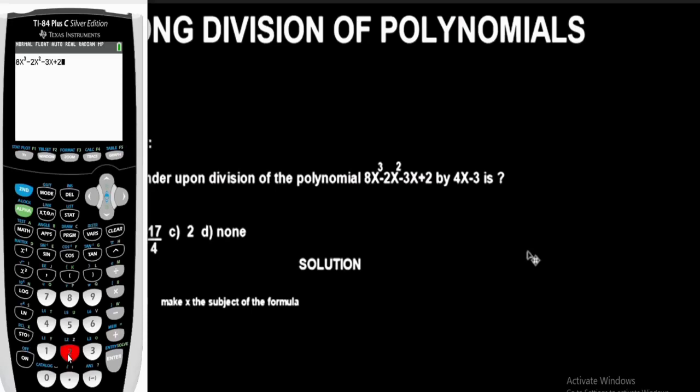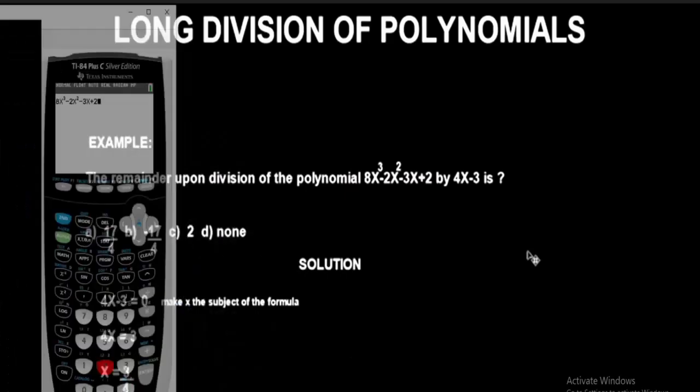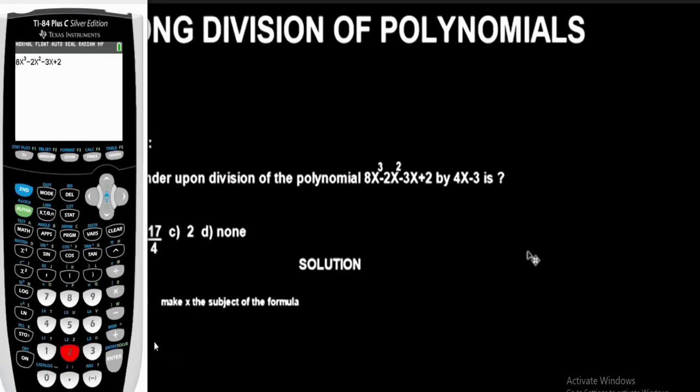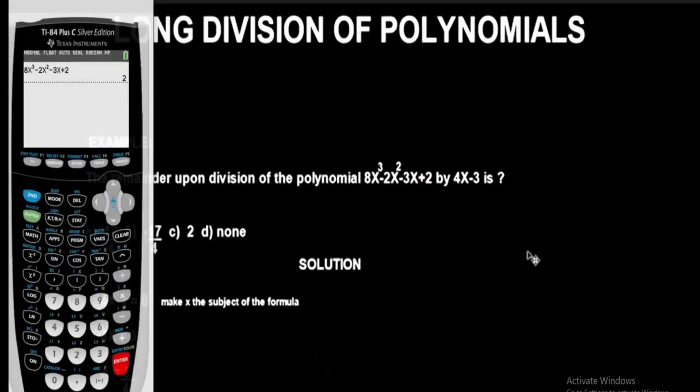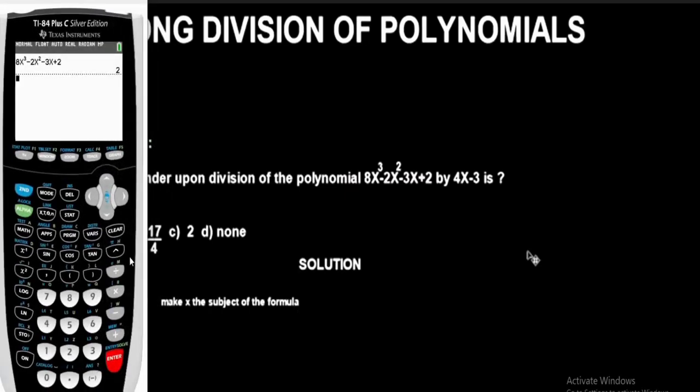That's it guys. Now let's press Enter button to see the remainder of the polynomial. Remember we have options here, so let's press Enter button now. Very simple guys. You see we have 2 as the remainder. It's as easy as that. The correct option to this question is option C. So 2 is the remainder of this polynomial.